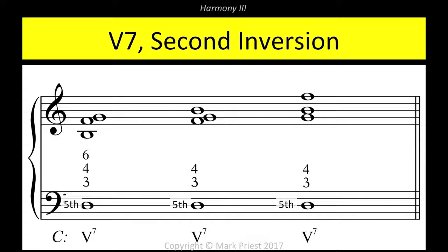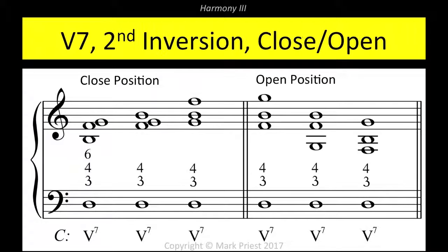The bass of the second inversion is the fifth of the V7 chord. The upper voices, assigned the third, root, and seventh of the chord, are at the intervals of sixth, fourth, and third, respectively, above the bass note — hence the figuring VI-IV-III, often abbreviated as V4-3. This applies regardless of whether the upper voices are arranged in close position or in open position. What counts is that the fifth of the seventh chord is situated in the lowest voice. Close, open.